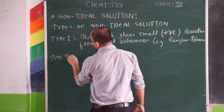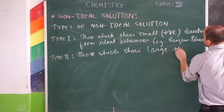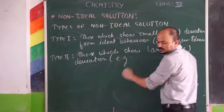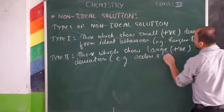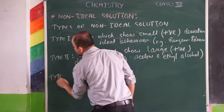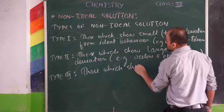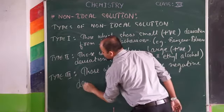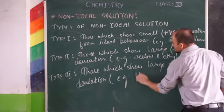Type two: those with large positive deviations from ideal behavior — example: acetone and carbon disulfide. Type three: those with large negative deviations from ideal behavior — example: HCl and water solution. So these are the three types of non-ideal solutions.